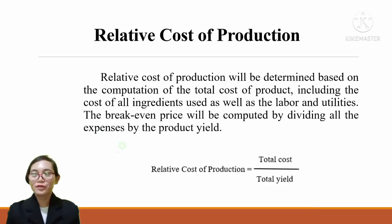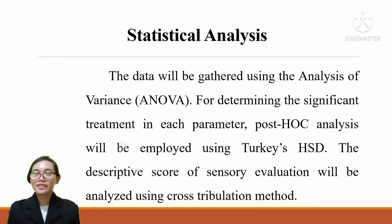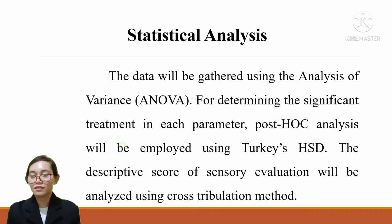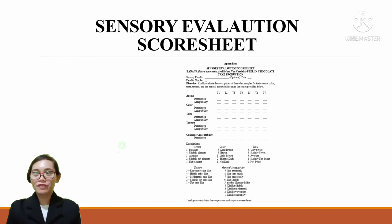Relative Cost of Production: The relative cost of production will be determined based on the computation of the total cost of the product, including the cost of all ingredients used as well as labor and utilities. The break-even price will be computed by dividing all the expenses by the product yield. Statistical Analysis: The data will be gathered using analysis of variance. For determining the significance of treatments, a post-hoc analysis will be employed using Tukey's HSD. The sensory evaluation scores will be analyzed using cost-revaluation method. This is the sensory evaluation score sheet.